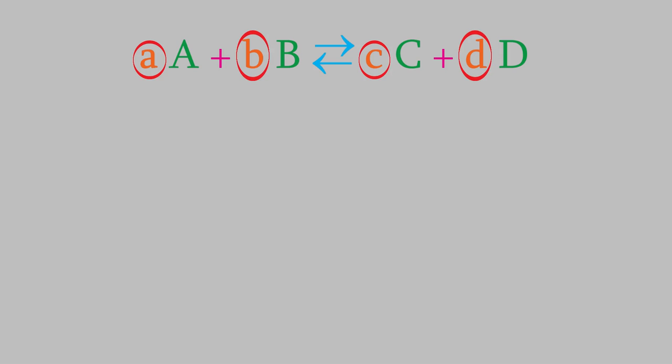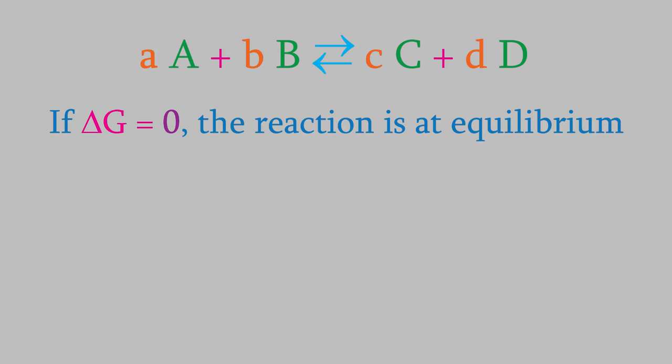The lowercase letters represent the coefficients of the balanced reaction. Since this is a generic reaction, there's not much that we know about it. However, if it's at equilibrium, we do know that the Gibbs free energy of the process is zero. So let's think a little more about the Gibbs free energy.